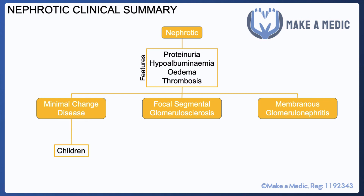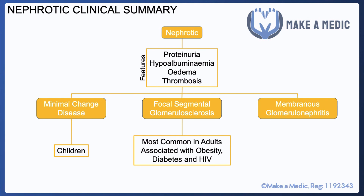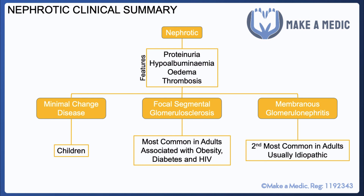There are three main diseases that fall under the category of nephrotic syndrome. Minimal change disease is primarily seen in children. Focal segmental glomerulosclerosis (FSGS) is the most common cause of nephrotic syndrome in adults and tends to be associated with other chronic diseases like obesity, diabetes, and HIV. Membranous glomerulonephritis is a largely idiopathic condition and is the second most common cause of nephrotic syndrome in adults. All of these are thought to work by causing some sort of damage to the podocytes.